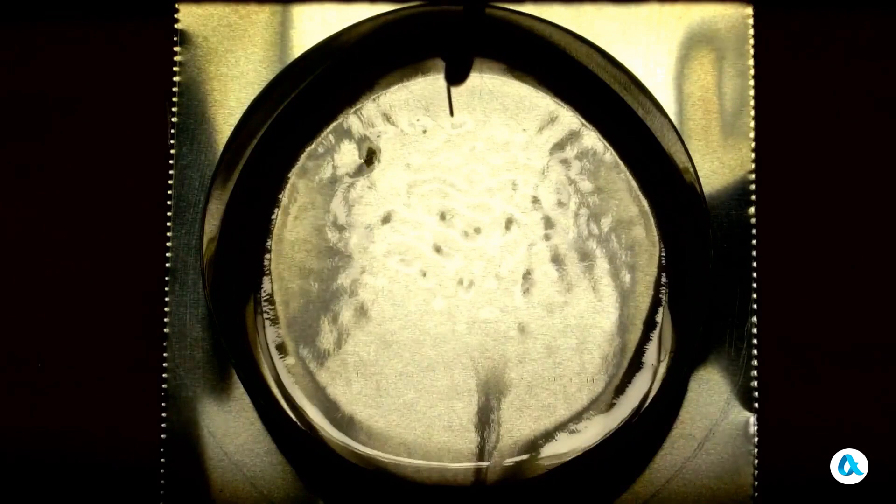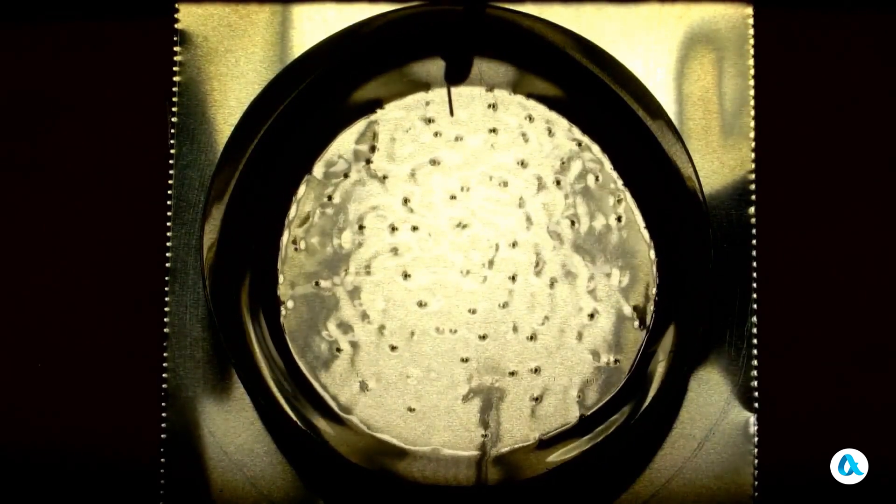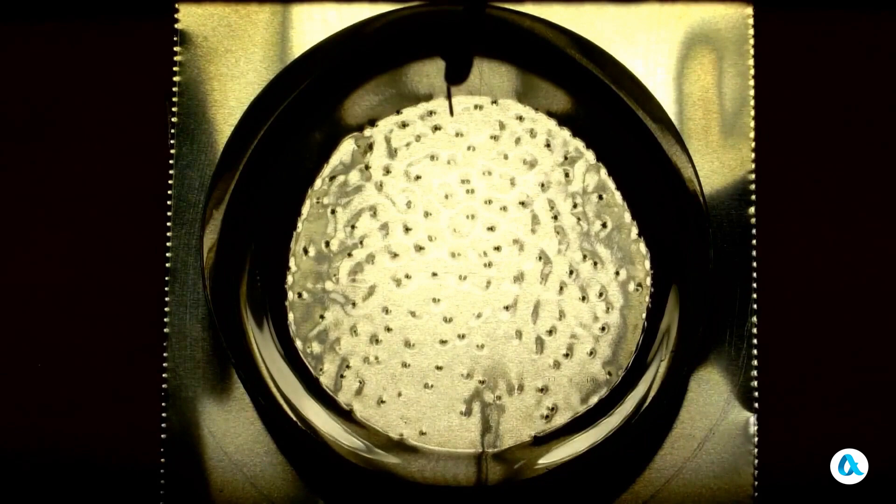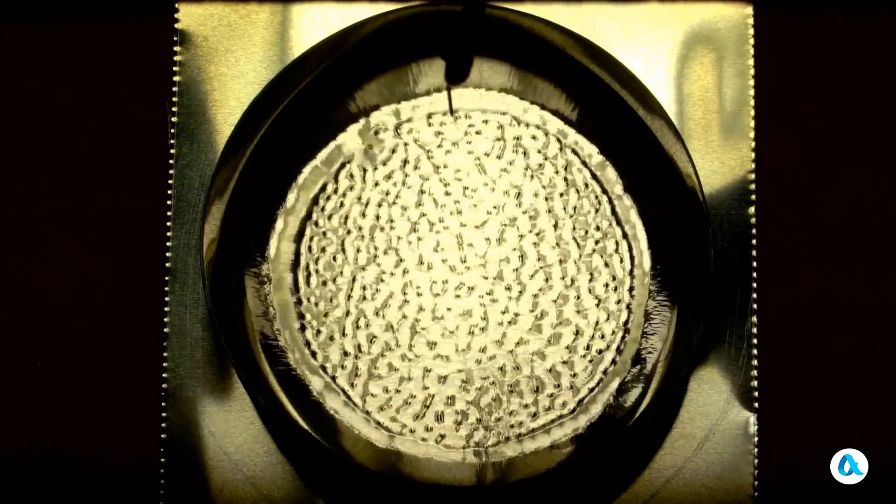At 6 kV, the surface of the oil becomes covered with small craters. Let's raise the voltage to 10 kV. The ripples are replaced by strange waves that move across the surface of the oil.